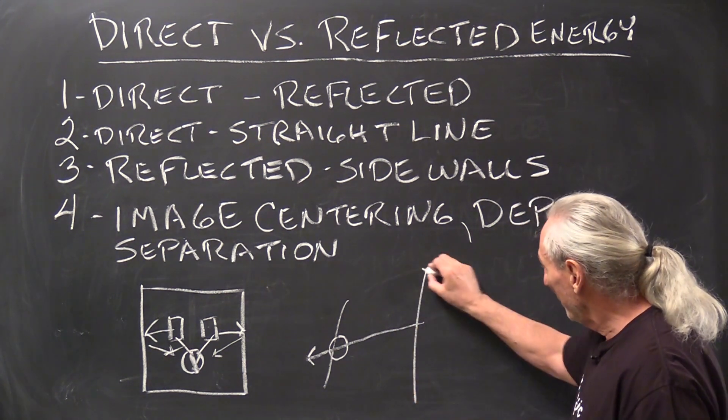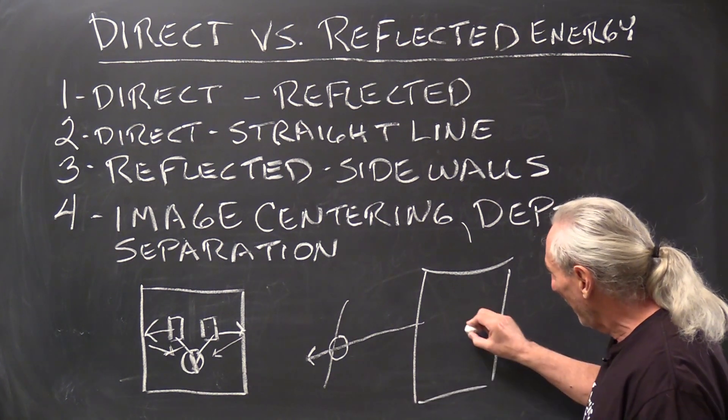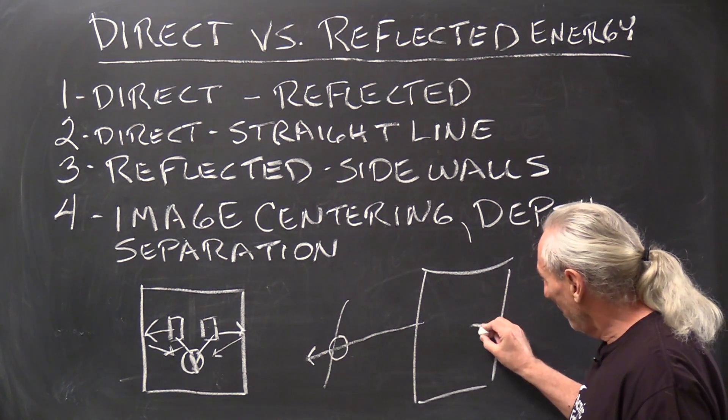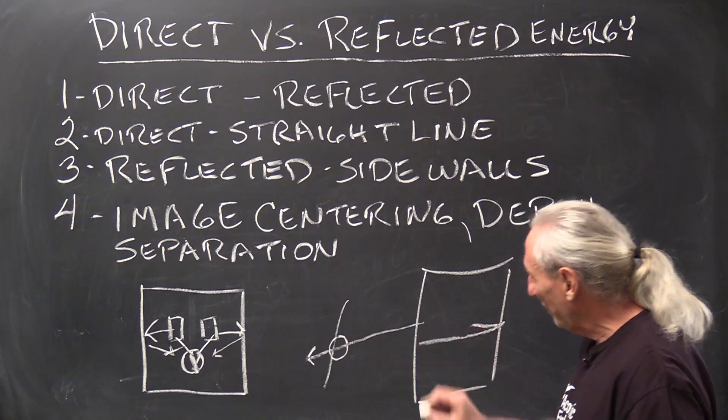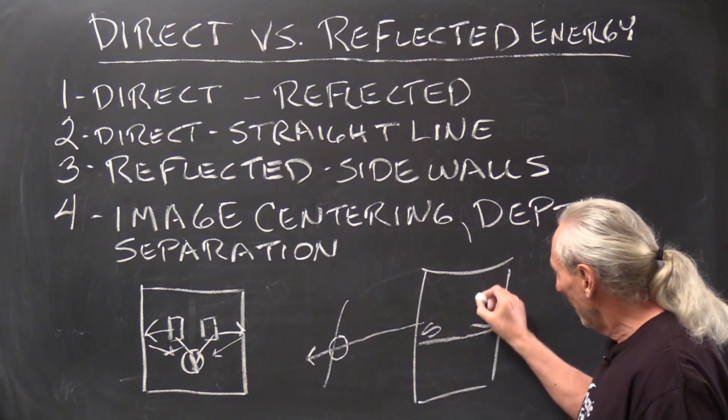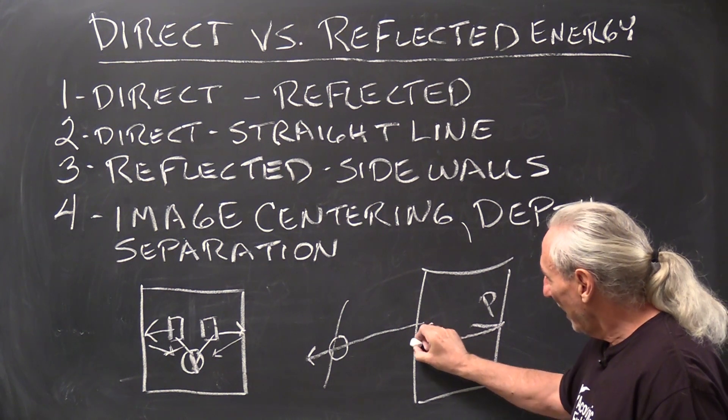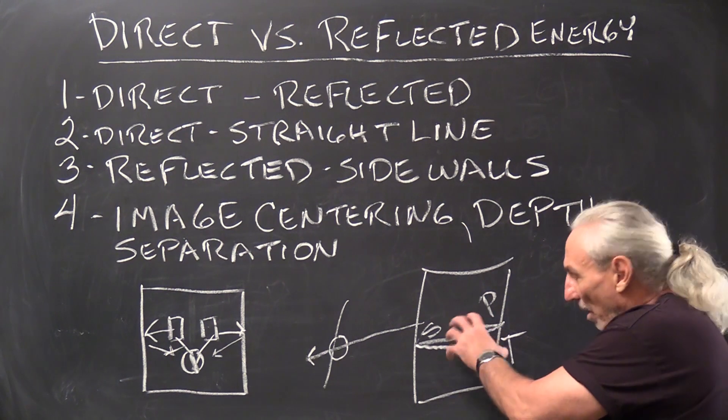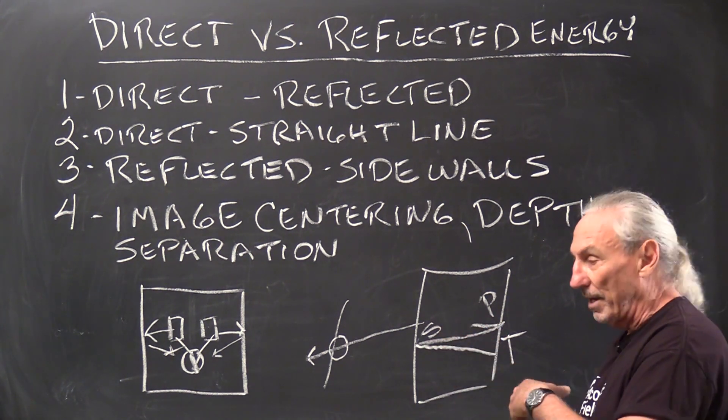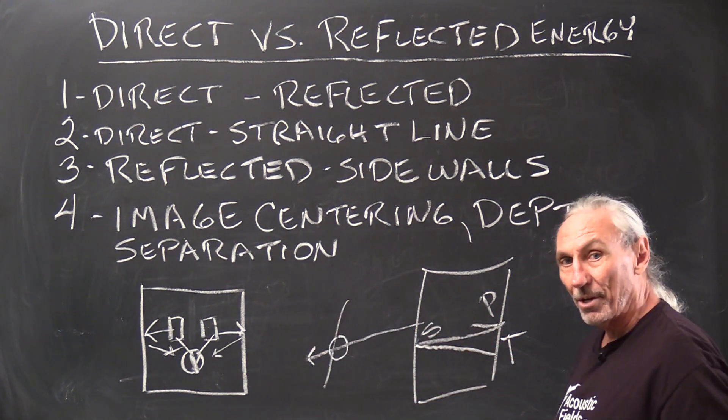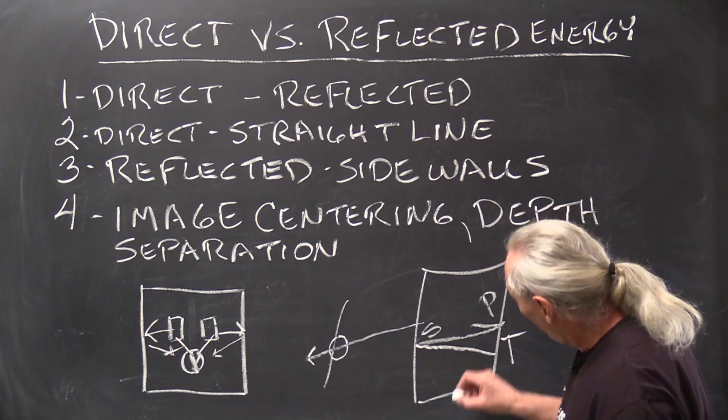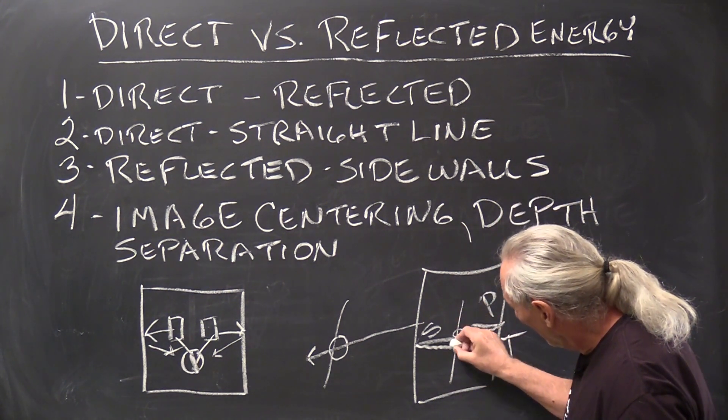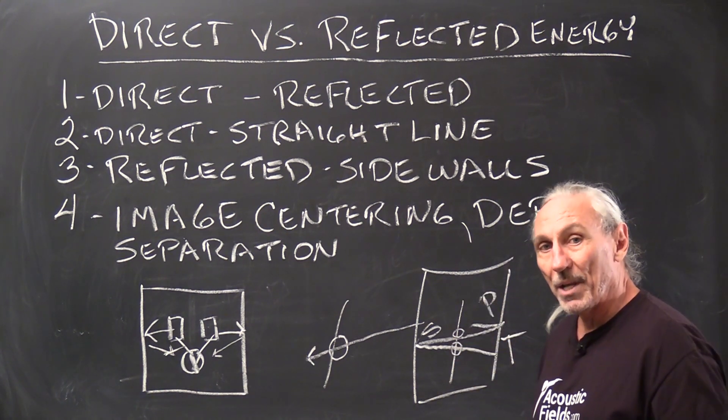So let's go back to our room example. What do we have when it's reflected? We have the primary reflection, then the primary reflection travels across to the opposite wall becomes secondary. Then the secondary reflection travels back becomes tertiary. So we have all of these reflections juxtapositioning themselves on the direct energy. And every time they cross that line, we get distortion here. You get enough of them, it's audible.